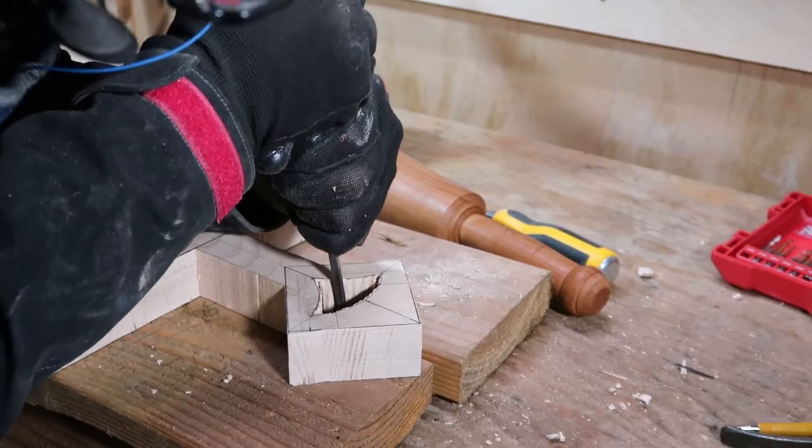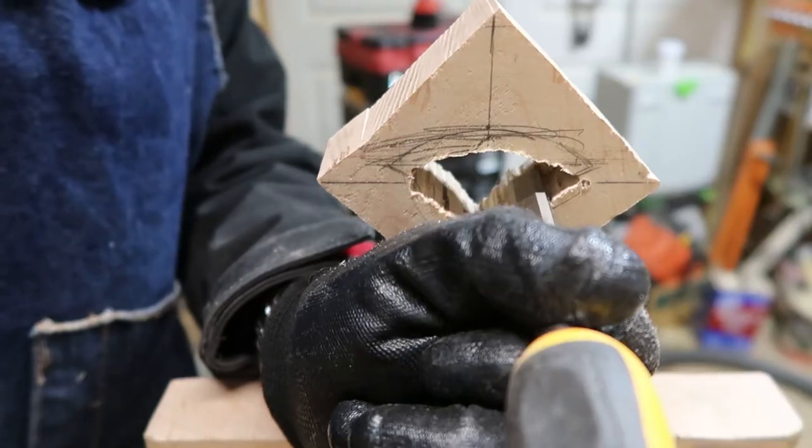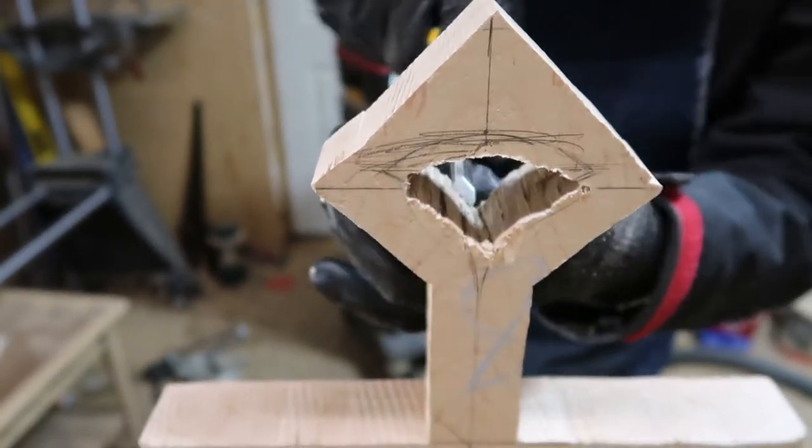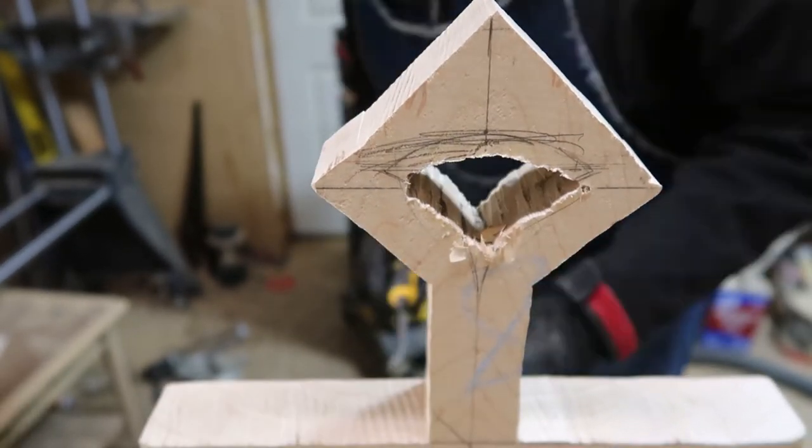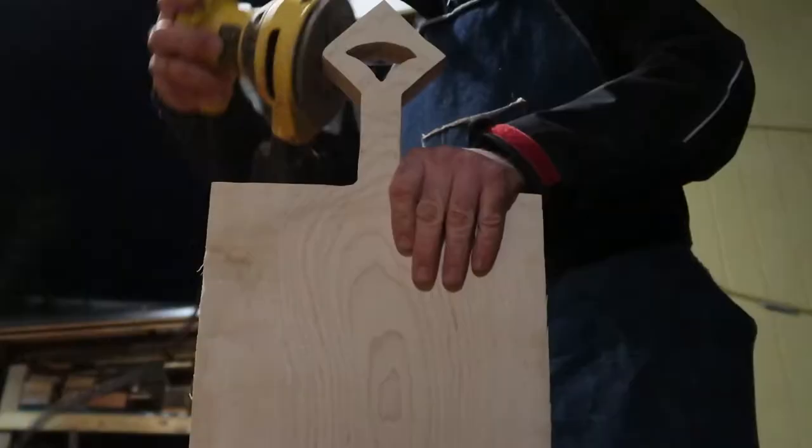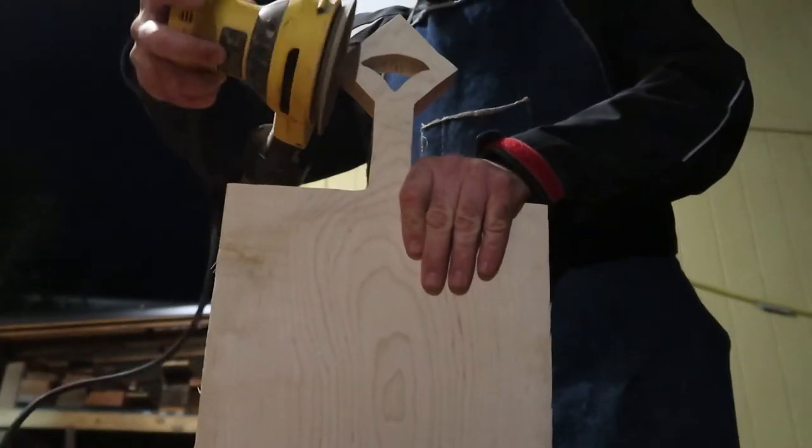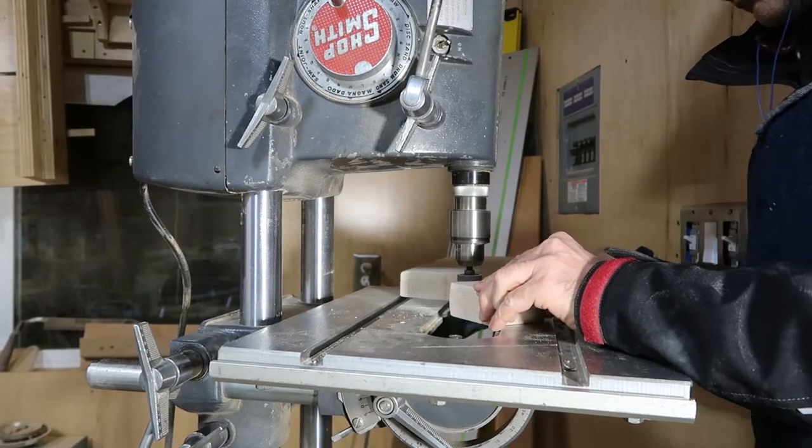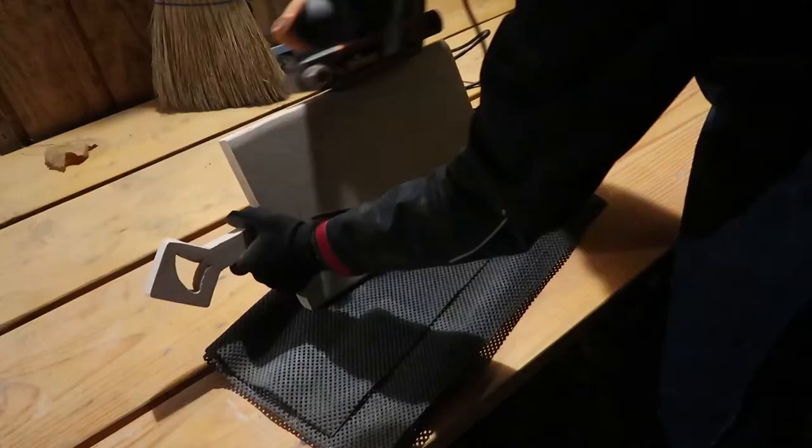Then I used a chisel and a rasp to smooth it all out. I sanded off the saw marks and flattened the top and bottom.